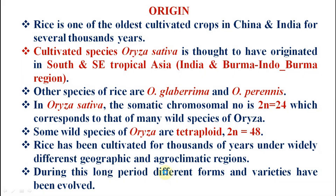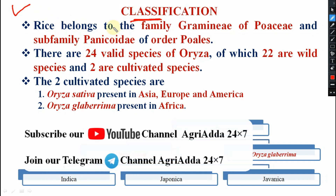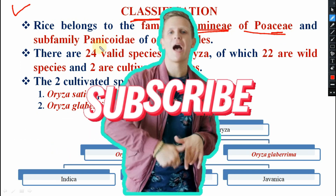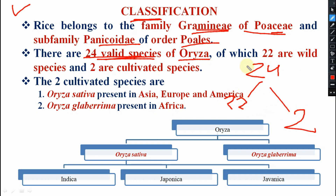During this long period, so many varieties have been evolved. Now coming to classification: rice belongs to the family Graminae or Poaceae, the subfamily is Panicoideae, and the order is Poales. There are 24 valid species of Oryza - this question may come in the exam. Out of 24, 22 are wild and two are cultivated species.